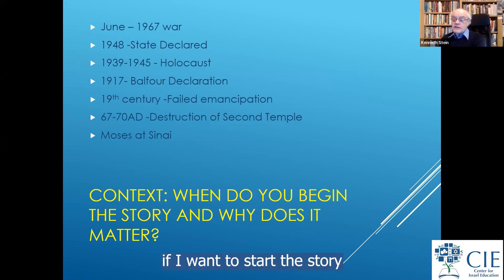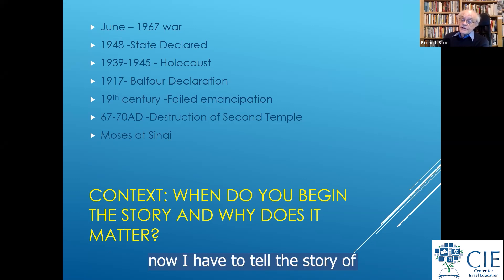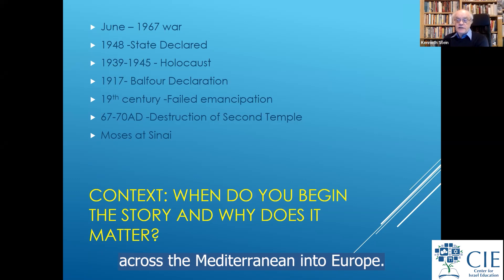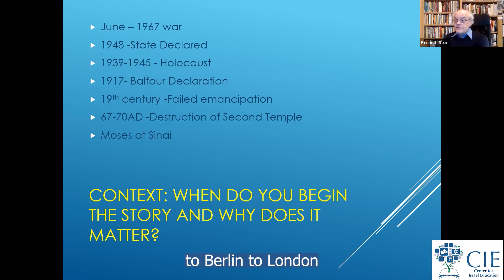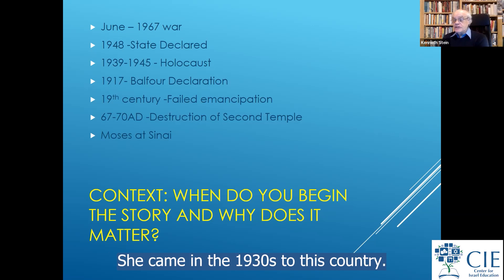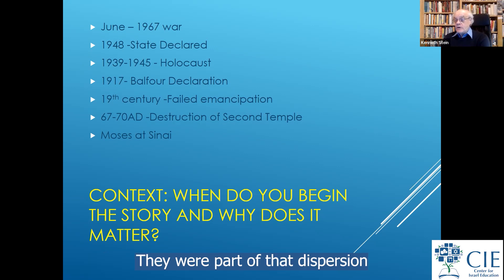If you want to start with the destruction of the Second Temple, you have to tell the story of why there was a Second Temple, and what happened to Jews thereafter — in the dispersion across the Mediterranean into Europe, from Izmir to Marrakesh to Tripoli to Berlin to London to Spain and Portugal. My mother came from Germany in the 1930s, but we traced our family back to Portugal in 1496 — part of the dispersion that came after the destruction of the Second Temple.